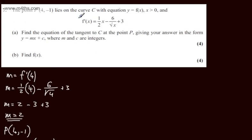If we integrate the gradient function, we can find f of x. So I can write that y will be equal to the integral of 1 half x. I'm just going to rewrite this now as a negative power. We'll have minus 6x to the power of minus 1 half plus 3, and we're integrating with respect to x. So if I integrate the gradient function, I'm going to get the original function back.